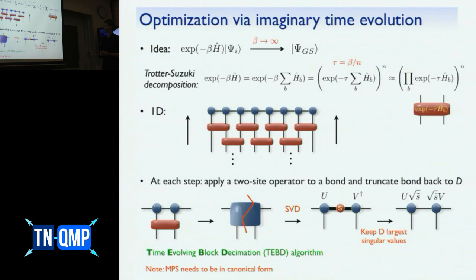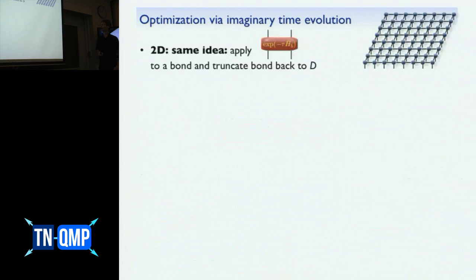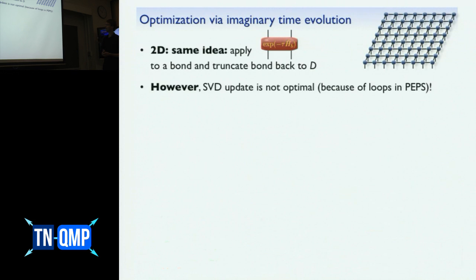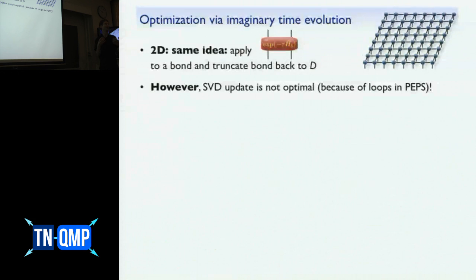Now we want to do the same thing in two dimensions. We have these two-body operators we want to apply to our PEPS or iPEPS wave function, which increases the bond dimension, and then we truncate back to the original bond dimension. The problem is that using an SVD-type update is no longer optimal, because we have loops in the tensor network. When we cut a bond, we don't split the system into two pieces as in 1D, so we can no longer think of cutting a bond as performing a Schmidt decomposition, and the SVD-type update is no longer justified.